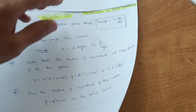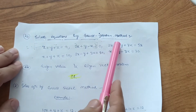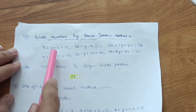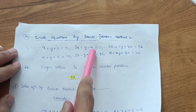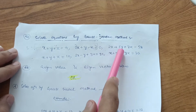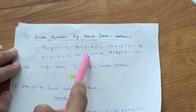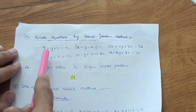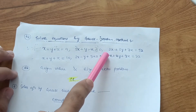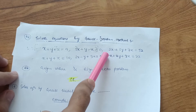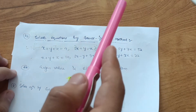Next is solving equations by Gauss-Jordan method, which is also very simple. For example: x + y + z = 9, 2x + y − z = 0, 2x + 5y + 7z = 52. You have to put the equations in matrix form and then apply elementary row transformations to get the answers for this type of question.